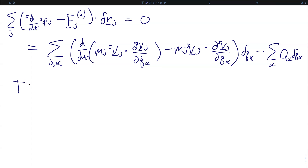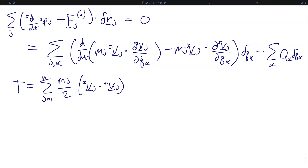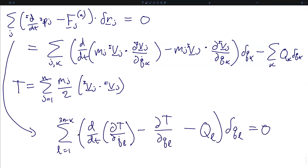Recalling that the kinetic energy T is given by the sum over all particles of their masses over two times the norms of their inertial velocities squared, we can rewrite D'Alembert's principle as the sum over all generalized coordinates — index l from 1 to 3n minus k — of: the scalar time derivative of the partial of kinetic energy with respect to q_l-dot, minus the partial of kinetic energy with respect to q_l, minus the generalized force Q_l, all multiplied by delta q_l, equals zero.